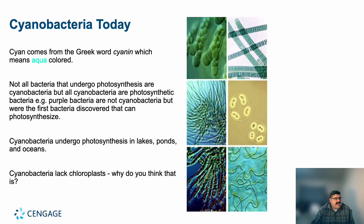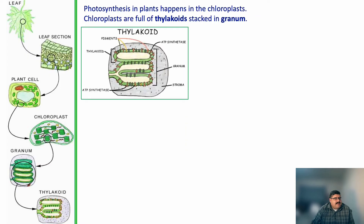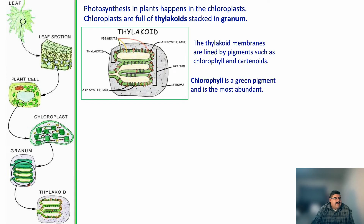Cyanobacteria — 'cyan' comes from the Greek word meaning aqua-colored. Not all bacteria that undergo photosynthesis are cyanobacteria, but all cyanobacteria are photosynthetic bacteria. Purple bacteria were the first bacteria discovered that can photosynthesize. Cyanobacteria undergo photosynthesis in lakes, ponds, and oceans, but they actually lack a chloroplast. In plants, photosynthesis happens in the chloroplasts, which are full of thylakoids stacked in grana; the thylakoid membranes are lined by pigments such as chlorophyll and carotenoids — chlorophyll being the green pigment and the most abundant.